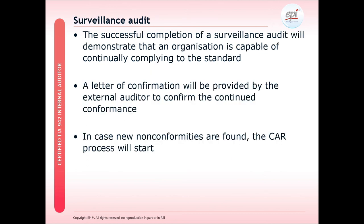Surveillance audits: the successful completion of a surveillance audit will demonstrate that the organisation is capable of continuing conformity to the TIA 942 standard. A letter of confirmation will be provided by the external auditor to confirm continued conformance. However, during the surveillance audit, if new nonconformity findings are found, the corrective action process will start again and the auditee will need to put in place an audit plan to remove the CAT 1s and any RFIs.